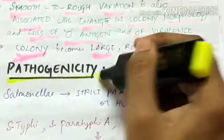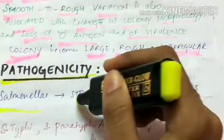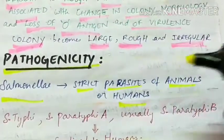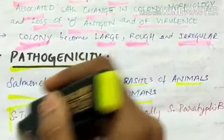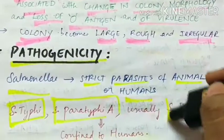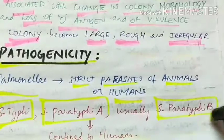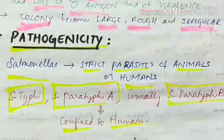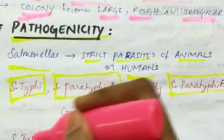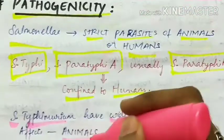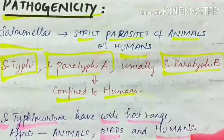Coming to the pathogenicity: Salmonella are strict parasites of animals or humans. Salmonella typhi, Salmonella paratyphi A, and usually Salmonella paratyphi B, they are confined to humans. Whereas the Salmonella typhimurium has wide host range, so it affects animals, birds, as well as humans.